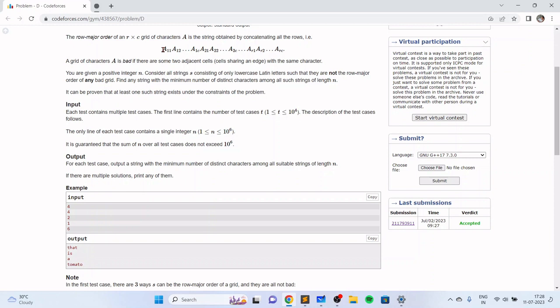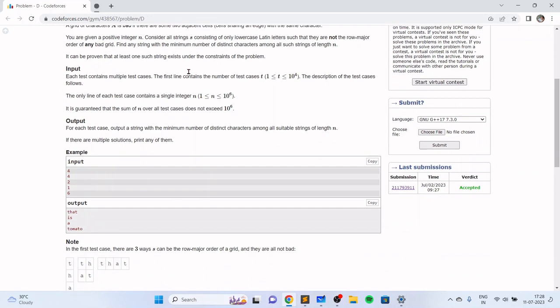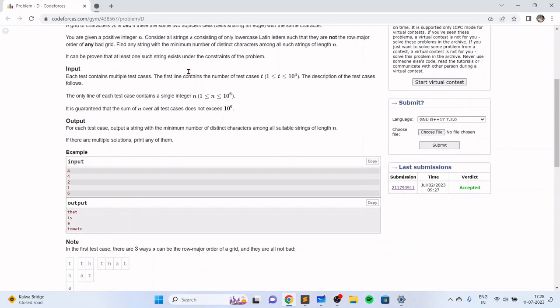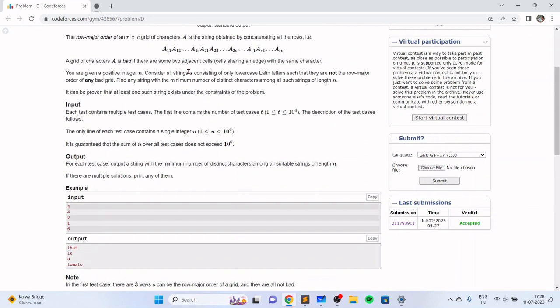We want to ensure that given a positive integer n, once you write a string s of length n in a grid, there will be no row major order which contains two adjacent cells with the same character, and you want to find the string with the least number of distinct characters.